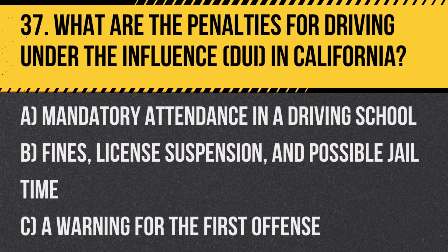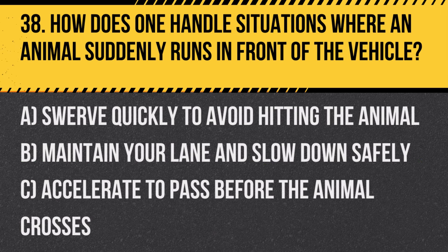Question 37: What are the penalties for driving under the influence (DUI) in California? A. Mandatory attendance in a driving school. B. Fines, license suspension, and possible jail time. C. A warning for the first offense. Answer: B. Fines, license suspension, and possible jail time. DUI penalties are severe to deter impaired driving and ensure public safety.